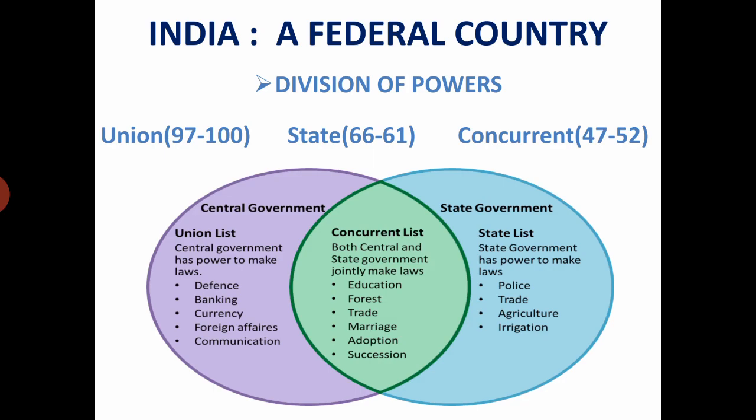Only the central government has the power to make laws on the subjects mentioned in the union list. Originally the constitution provided 97 subjects, but after amendments there are now 100 items in the union list. Now let us discuss the state list.